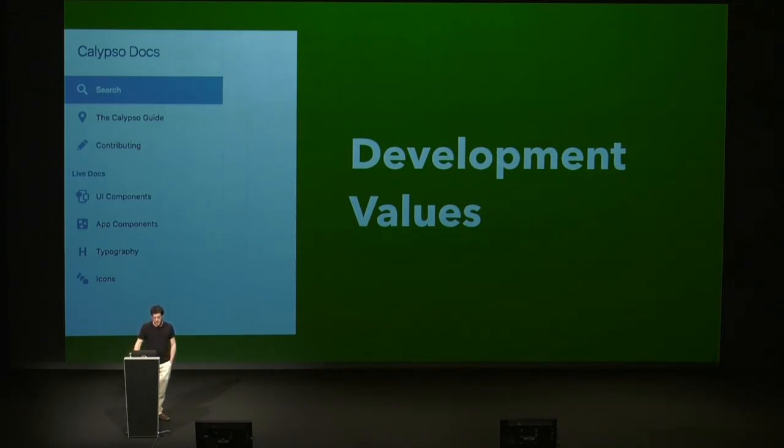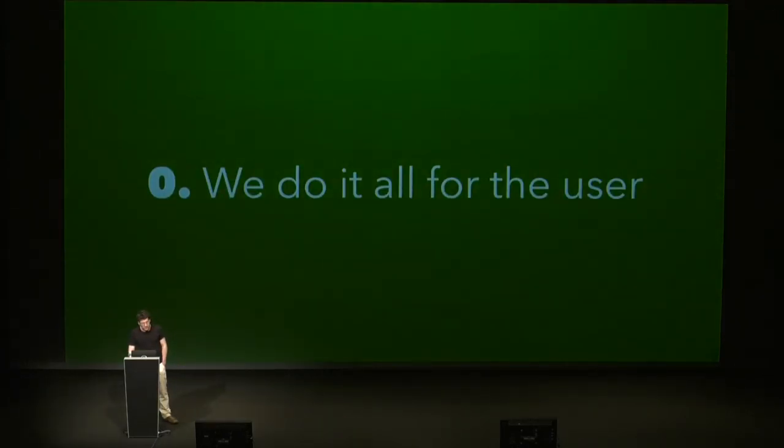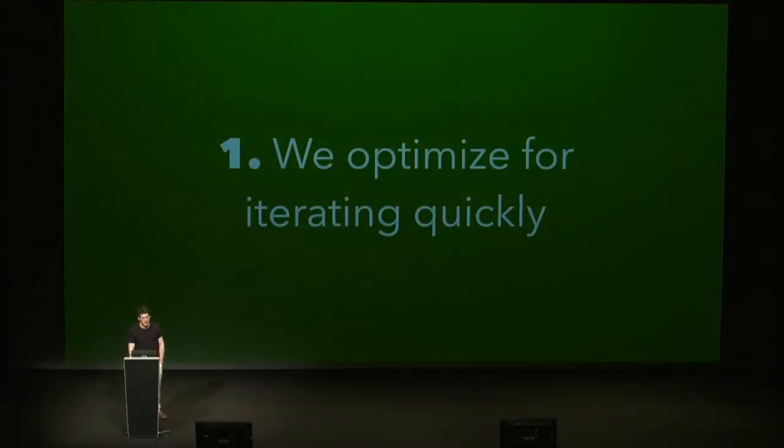This takes me to the development values of the project, which have driven why we chose React and all these different utilities. The first one is that we do it all for the user — at the heart of where I started, with the perception of speed and the kind of interfaces that users expect in modern web applications. The other one is that we optimize for iterating quickly. This is a more developer-centric concern because there's always a proclivity to over-abstract things or make generic tools. An important tenet in Calypso is that we know abstractions always become burdens of knowledge, so we are very careful about the ones we adopt.